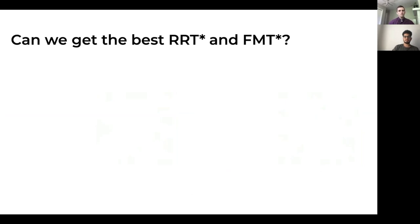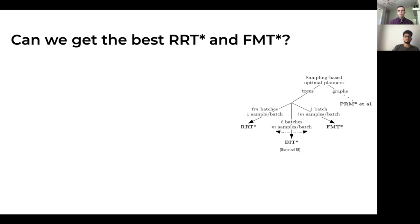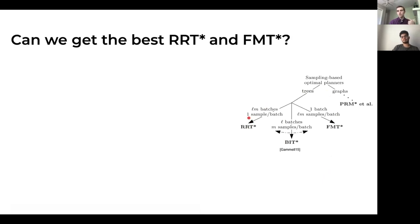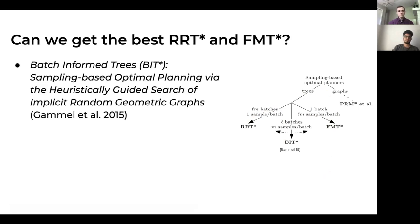The next question is how to combine the benefits of RRT* and Informed RRT* with the speed boost of FMT*. Looking at the development graph: RRT* takes one sample per batch continuously, while FMT* takes one batch at once and can't increase resolution over time. This led to BIT* — Batch Informed Trees — which tries to find the sweet spot, using batches to increase speed but also resampling batches to increase the resolution of the solution over time.